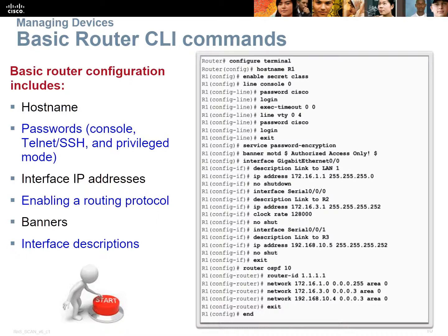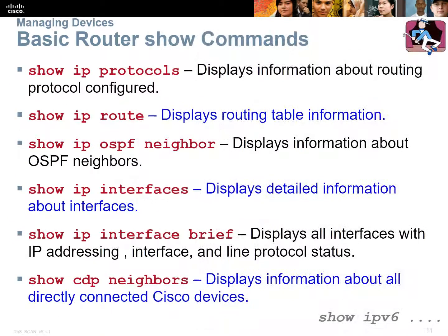We've got a little bit of OSPF here — we're going to spend a lot more time on that coming up soon. For basic router show commands: show IP protocols, show IP route, show IP OSPF neighbor, show IP interface, show IP interface brief, show CDP neighbors. These commands are the building blocks of all your troubleshooting. If anything doesn't go the way you think it should, don't just do a show run every time. Show IP route, show IP protocols, show IP interface brief, and show CDP neighbors — these four commands are going to give you 90% of all your troubleshooting.